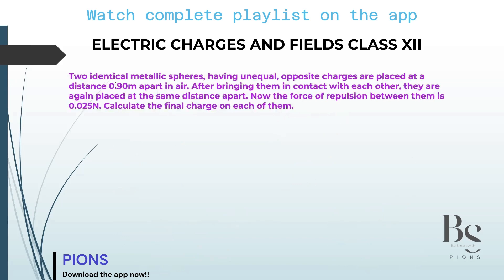The question says: two identical metal spheres having unequal and opposite charges are placed at a distance of 0.90 meter apart in air. After bringing them in contact with each other, they are again placed at the same distance apart. Now the force of repulsion between them is 0.025 Newton. Calculate the final charge on each of them.